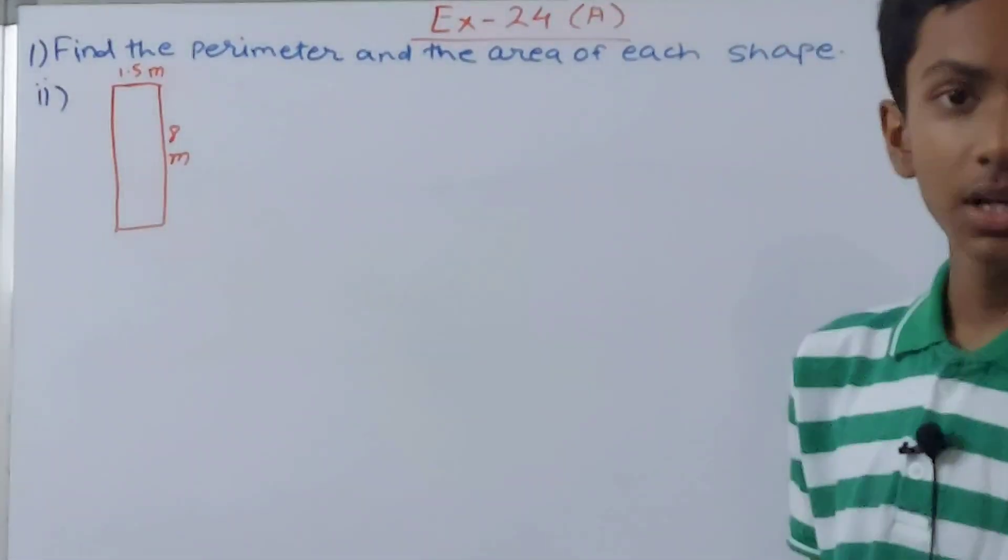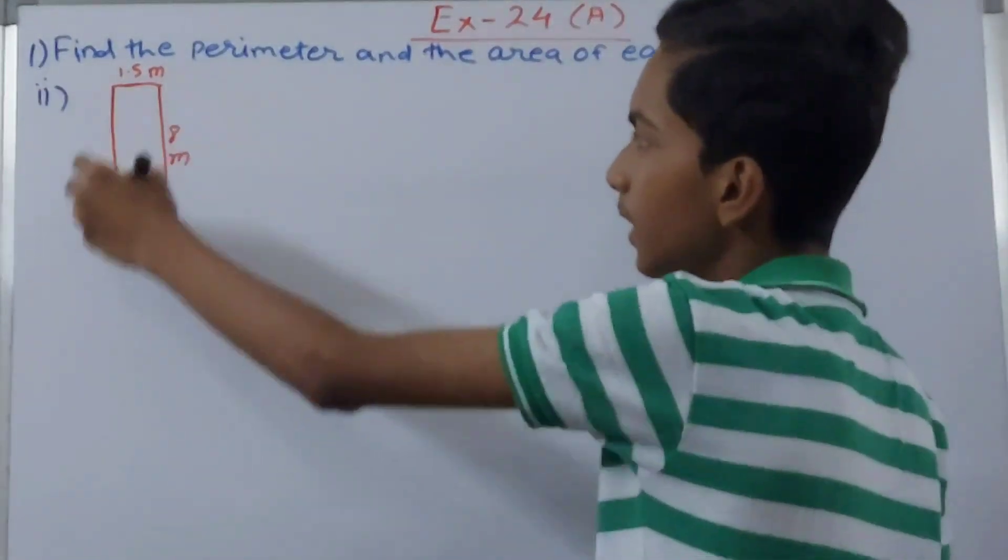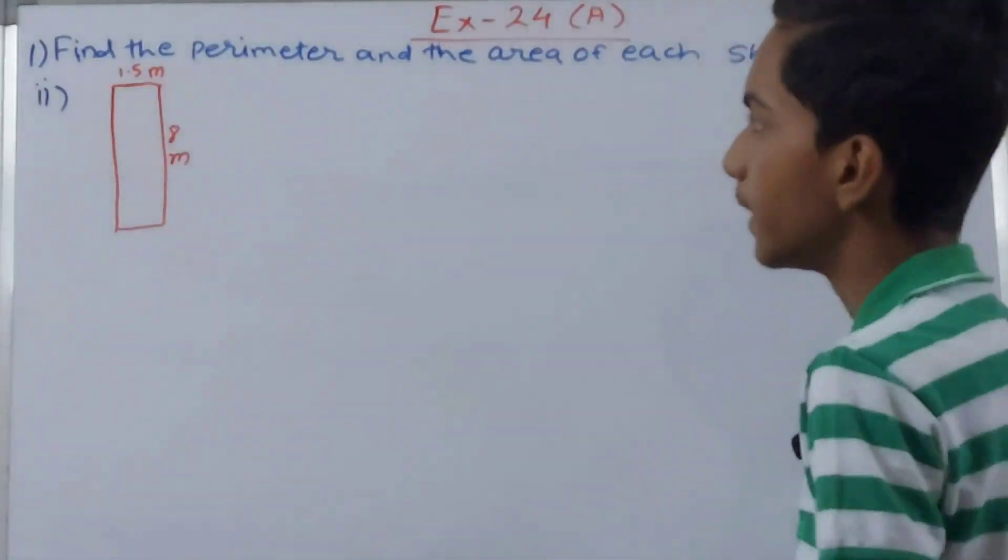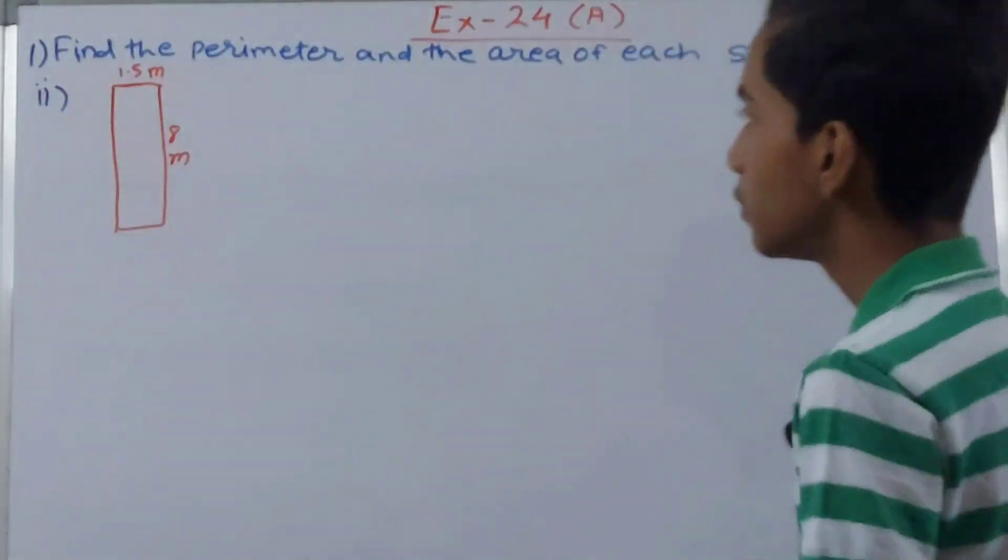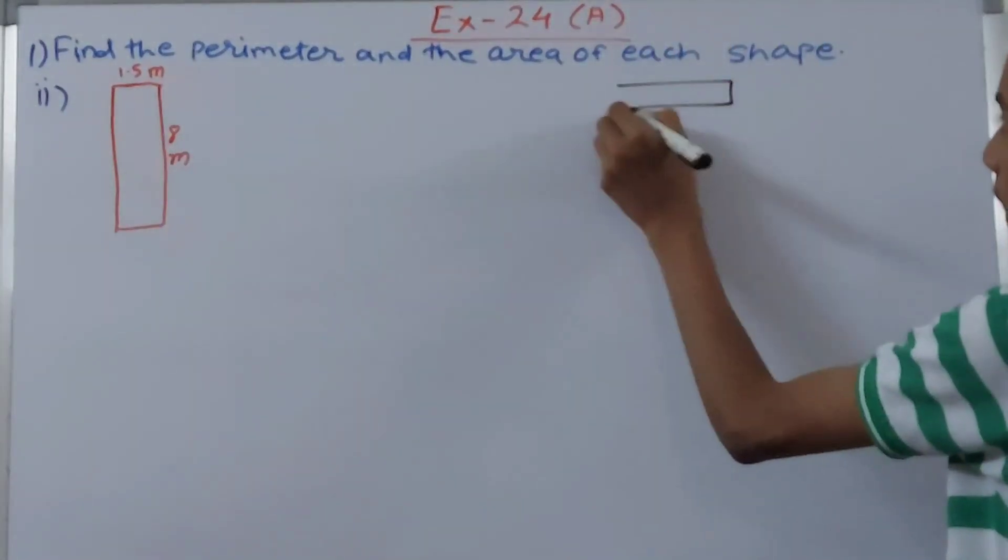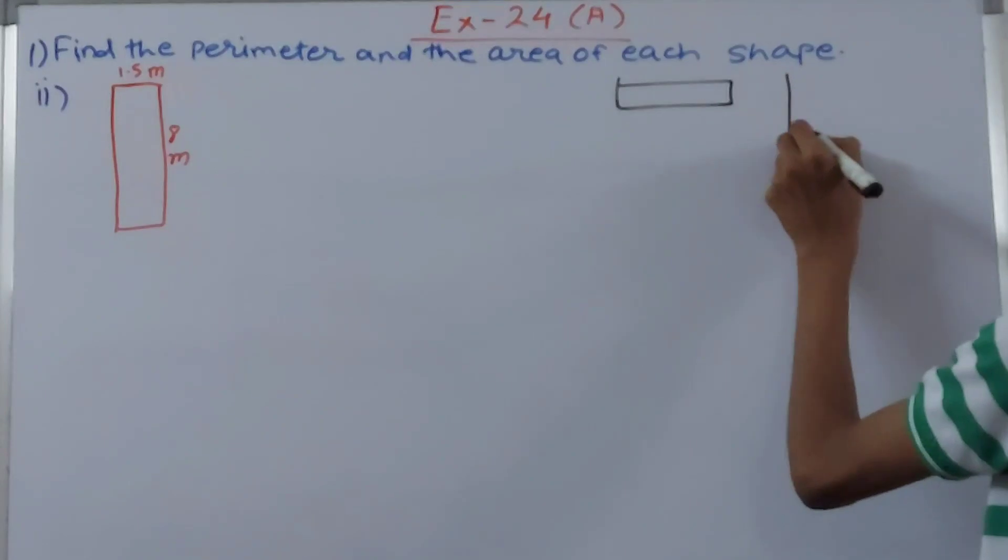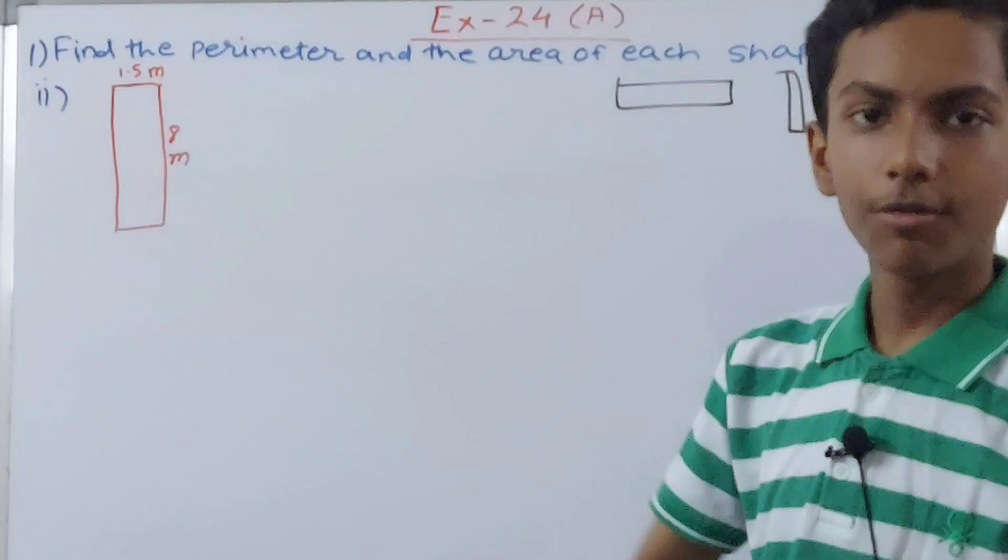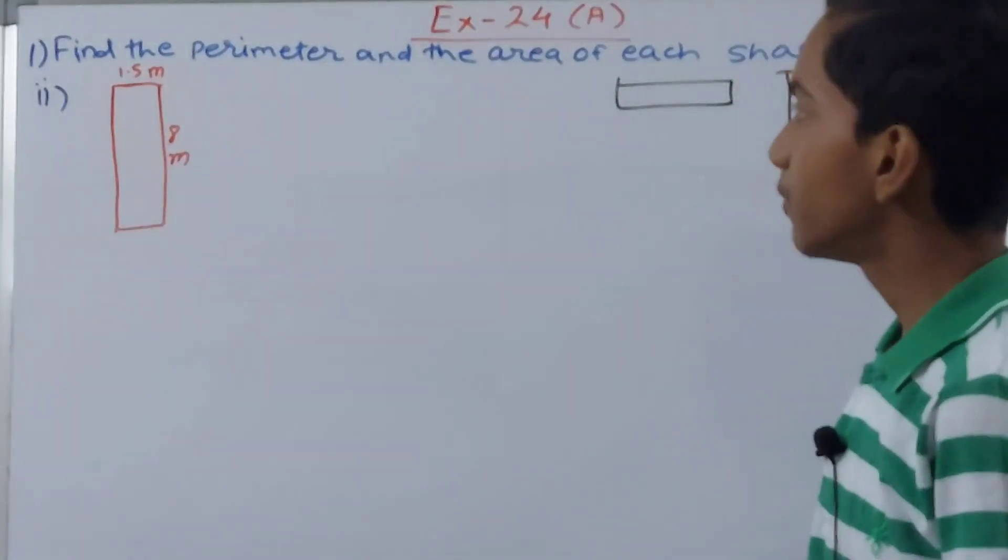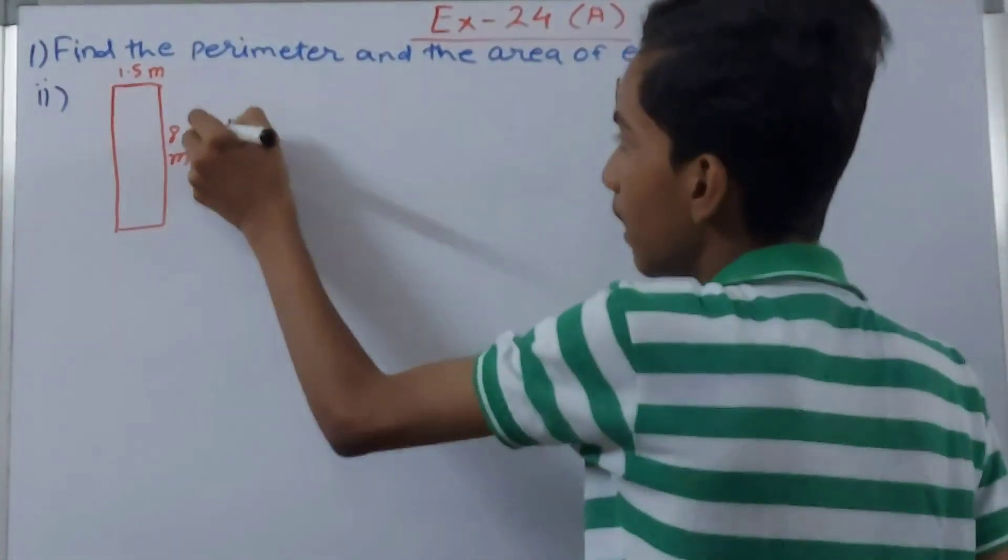Same thing is here also. You can see this is only a rectangle, only this has been tilted. One side is 1.5 meter and the other is 8 meters. The rectangle is usually like this but they've made it like this. Both of them are same, don't worry. Two of the sides are of different length.